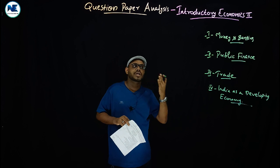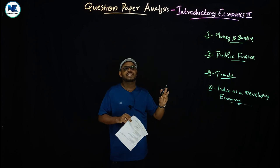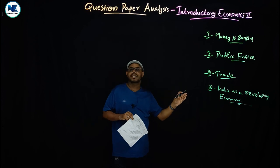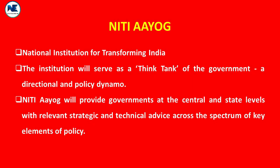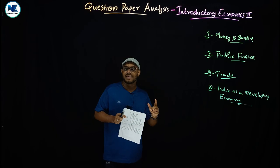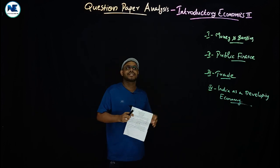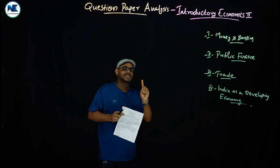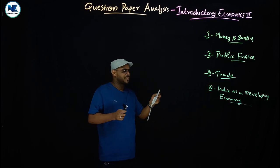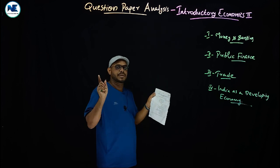Module 4 covers demographic issues, Census 2011, and developmental issues like poverty, unemployment, and inequality. It also includes poverty eradication measures, employment-generating schemes, and NITI Aayog — National Institution for Transforming India. Now let me discuss the previous year question paper and expected questions.